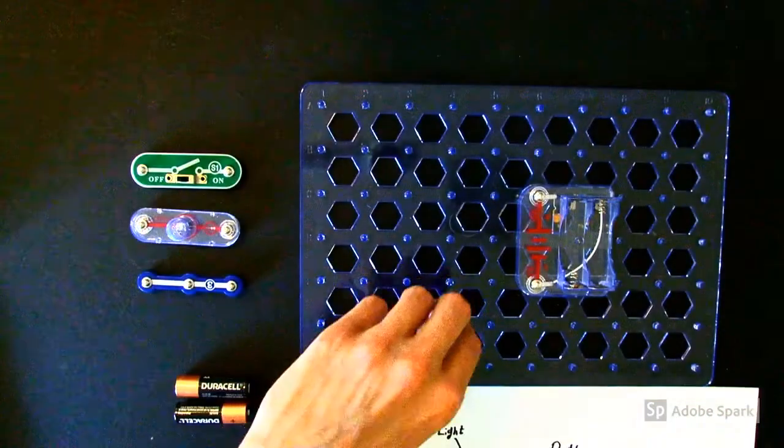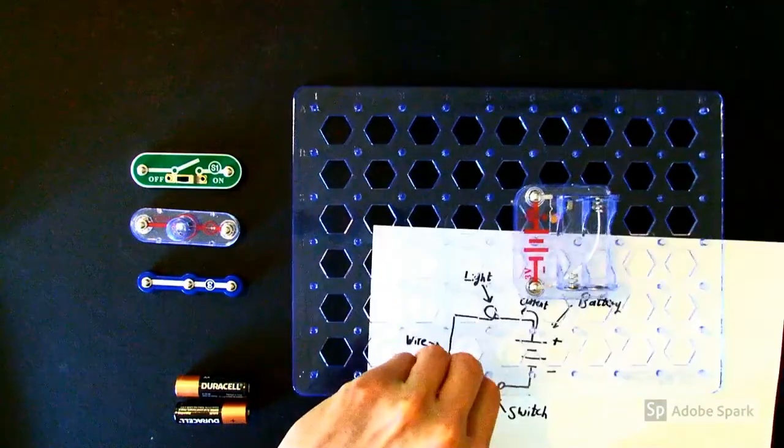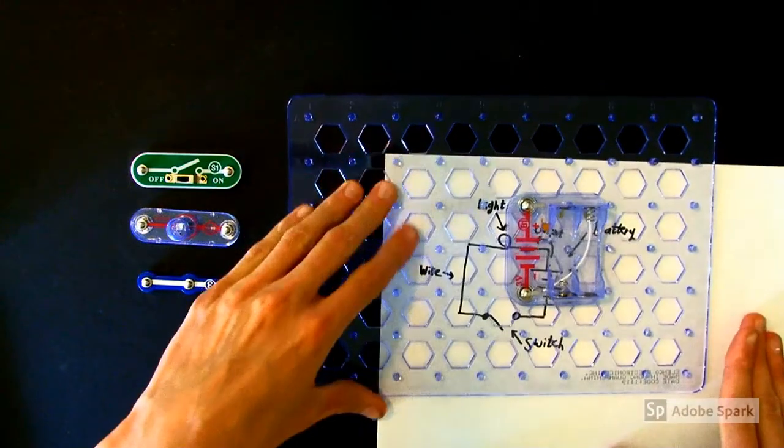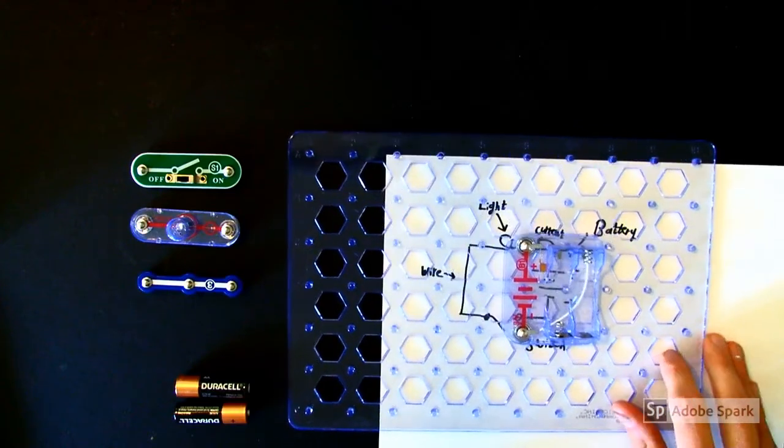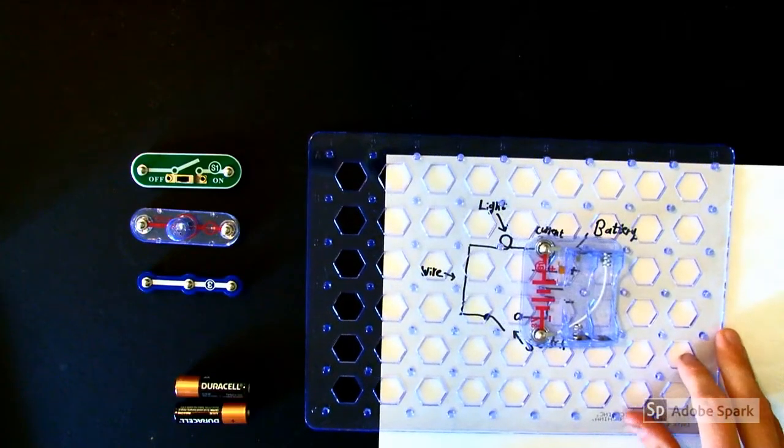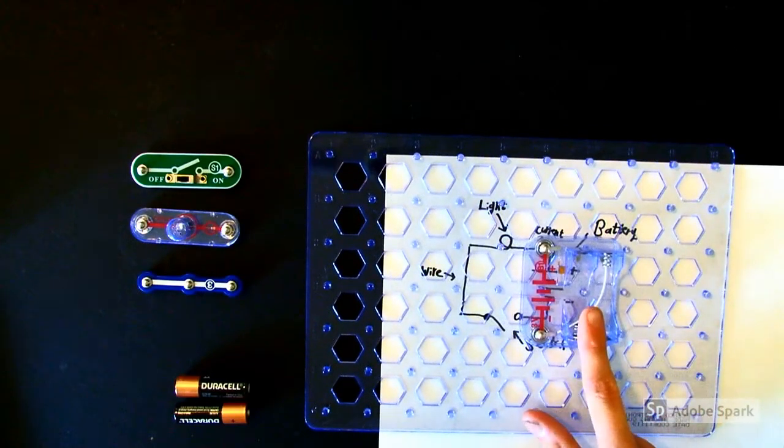I like to put my wiring diagrams underneath my snap circuit's grid while building. It helps me keep track of components. As you can see, I've already installed my battery component by snapping it to the grid.